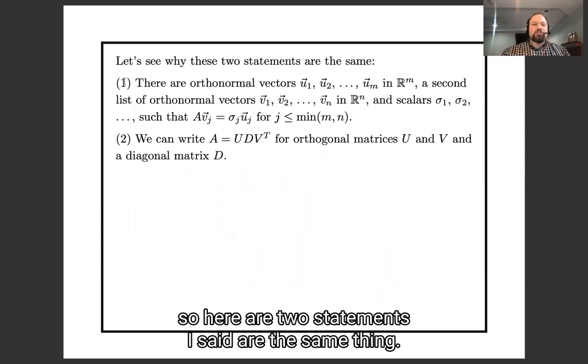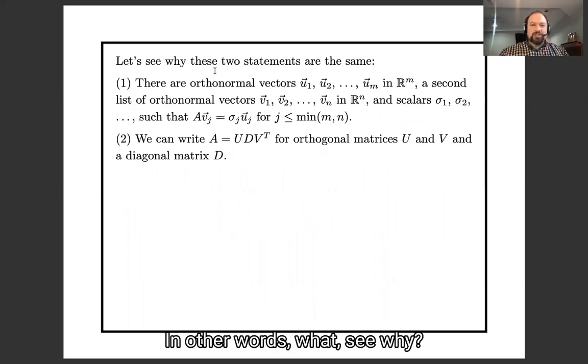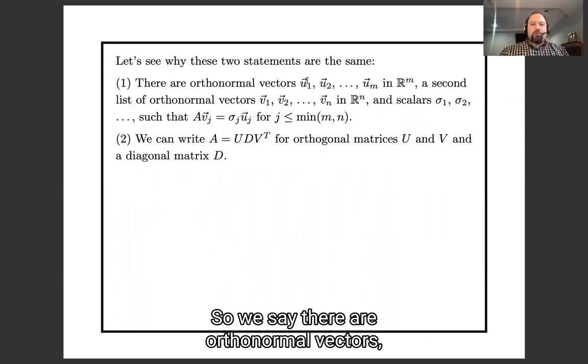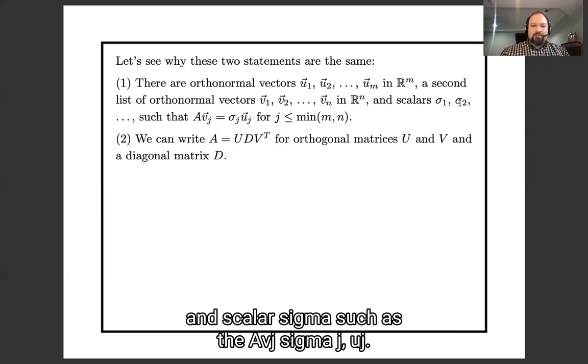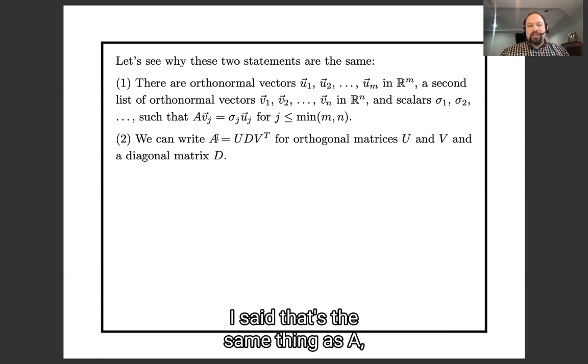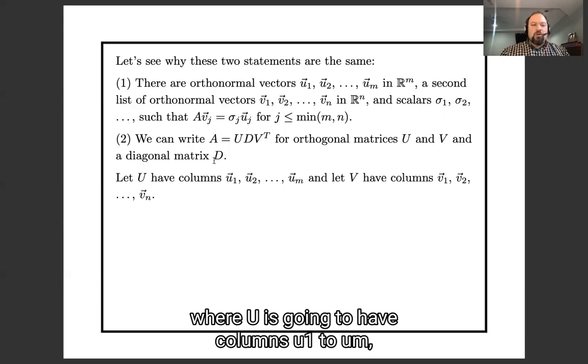Okay, so let's just make sure, so here are two statements I said are the same thing in other words, let's see why. So we're saying there are orthogonal vectors, orthogonal bases for R^m and for R^n, and scalars σj such that Avj = σjuj. And so that's the same thing as A = UDV^T.